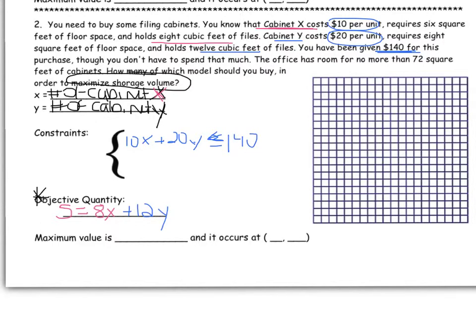We also know that we only have 72 square feet of cabinets, so cabinet X requires 6 square feet of floor space. So 6X and cabinet Y requires 8, and again, we have to have less than or equal to 72. Of course, we can't have negative cabinets, so they have to be greater than or equal to 0.